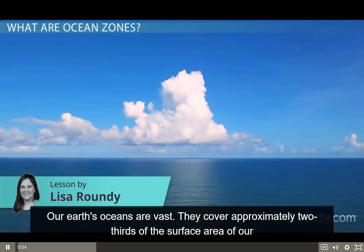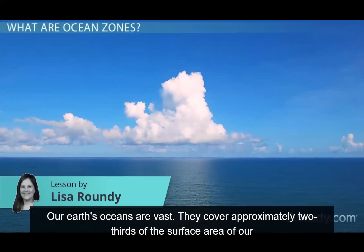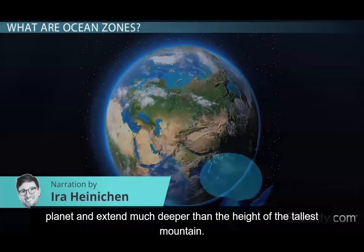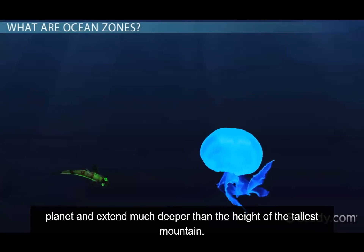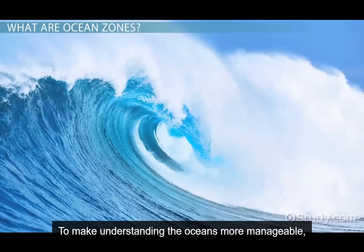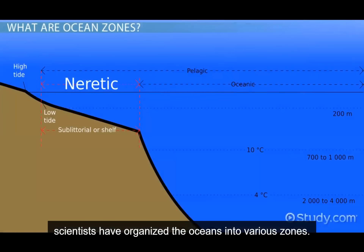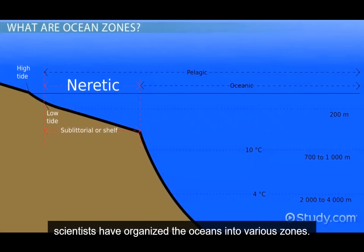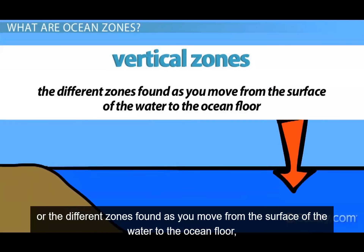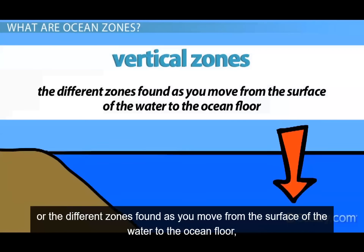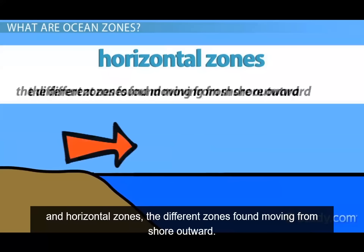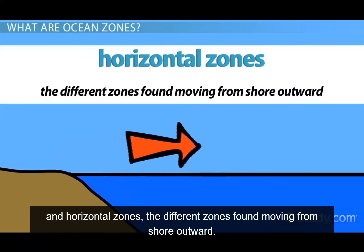Our Earth's oceans are vast. They cover approximately two-thirds of the surface area of our planet and extend much deeper than the height of the tallest mountain. To make understanding the oceans more manageable, scientists have organized the ocean into various zones. This lesson will look at vertical zones — the different zones found as you move from the surface of the water to the ocean floor — and horizontal zones, the different zones found moving from shore outward.